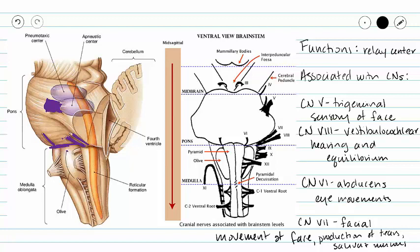We also see our reticular formation inside of our pons. So we are associated again with the reticular formation, but largely our function is to act as a relay center.